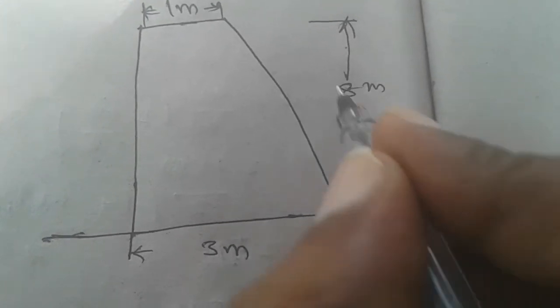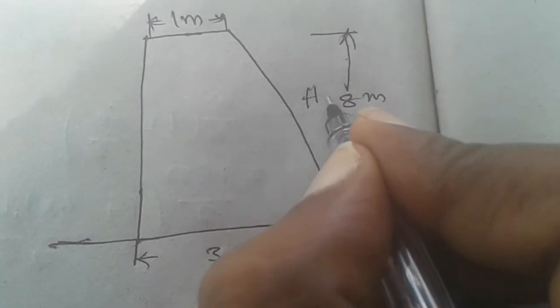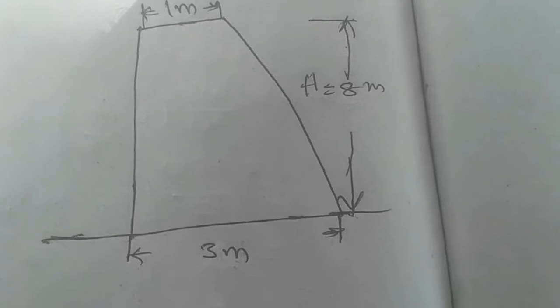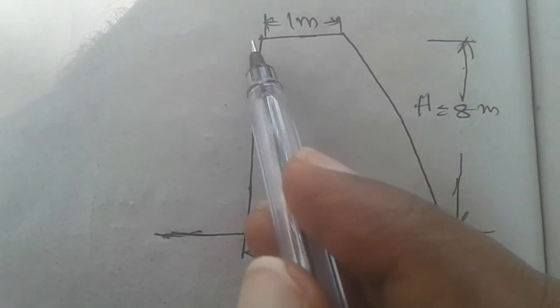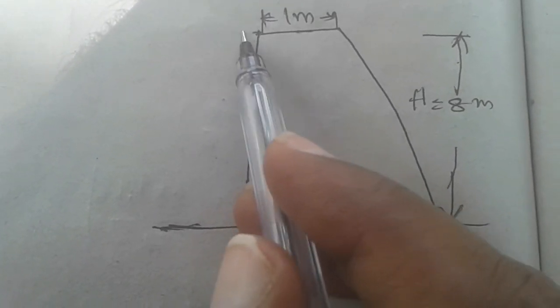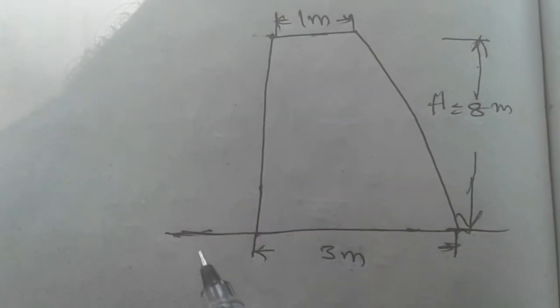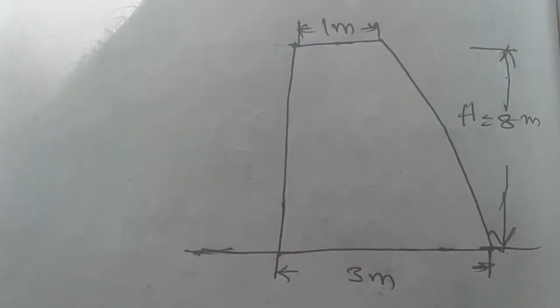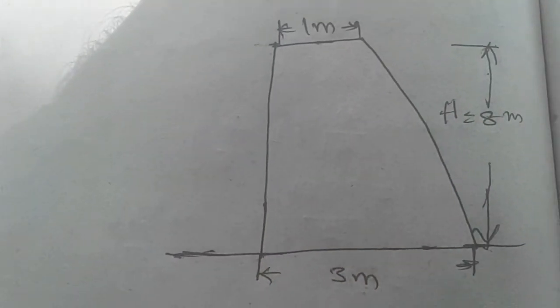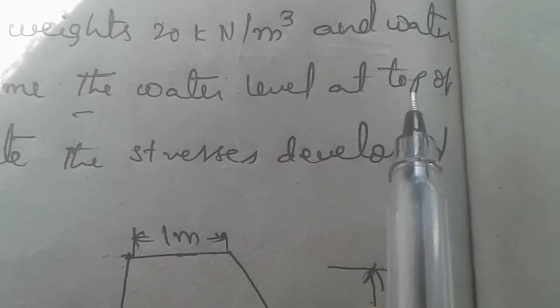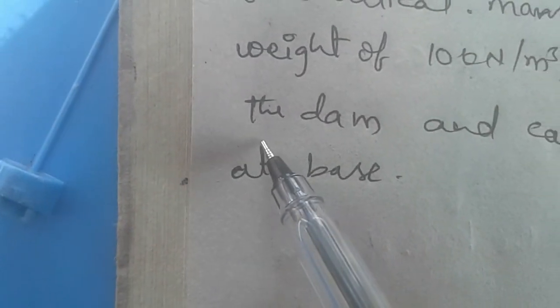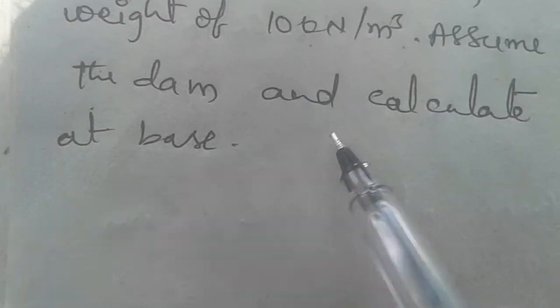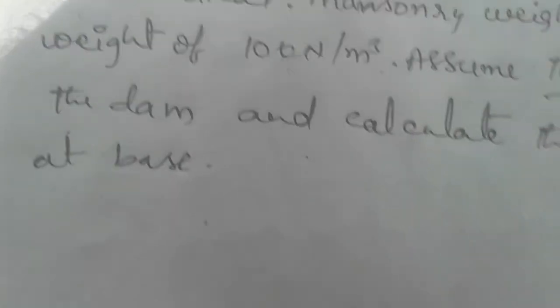In the question, water level is at the top, means the water is fully in the dam. So here, assume the water level at the top of the dam.